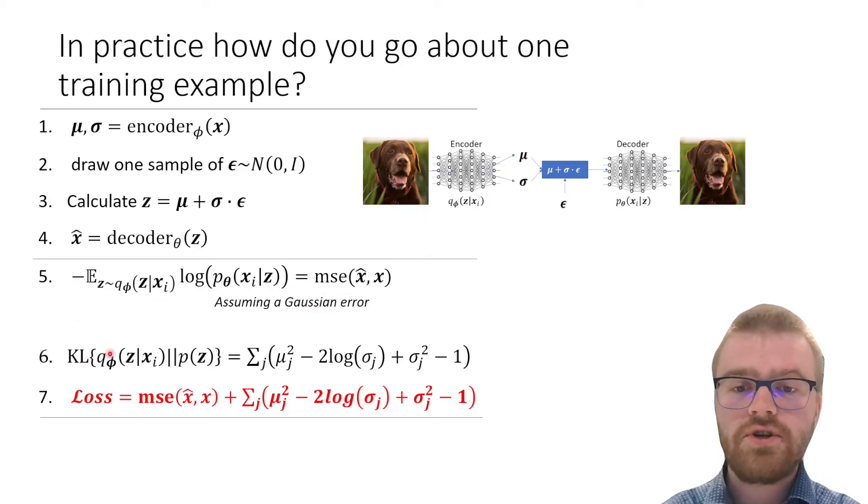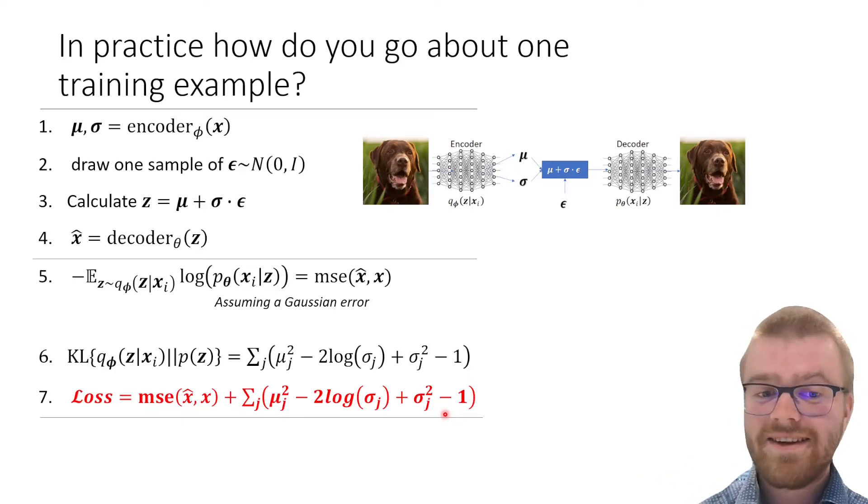So the total loss function is as follows. We can now easily backpropagate and update both the parameters of the decoder and the encoder.